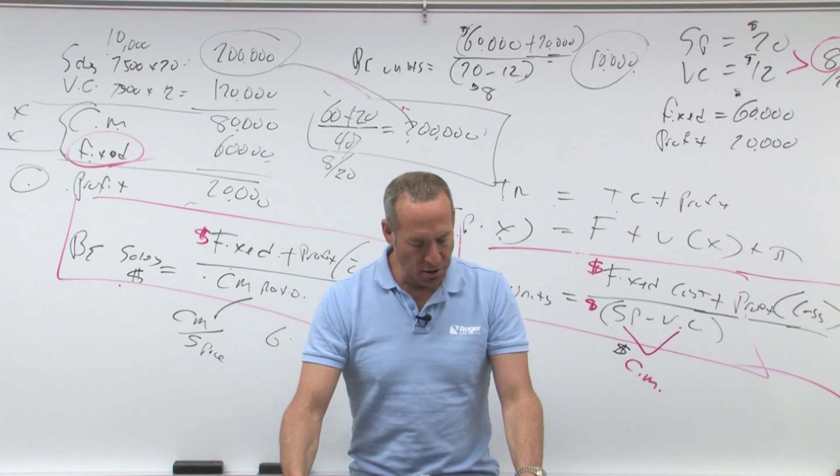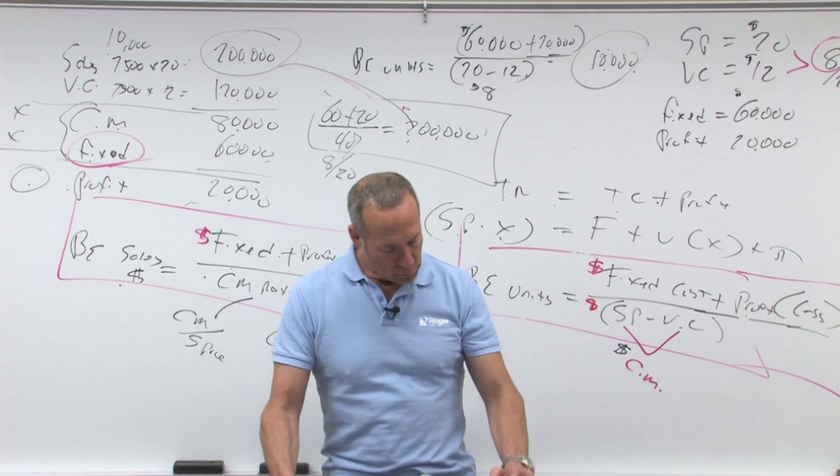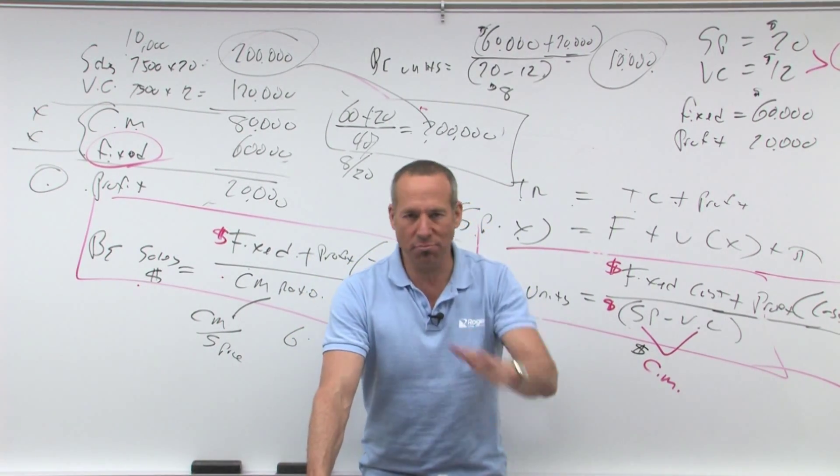Number 12, breakeven analysis assumes that over the relevant range, unit revenues are non-linear. No, in other words, most things are linear.